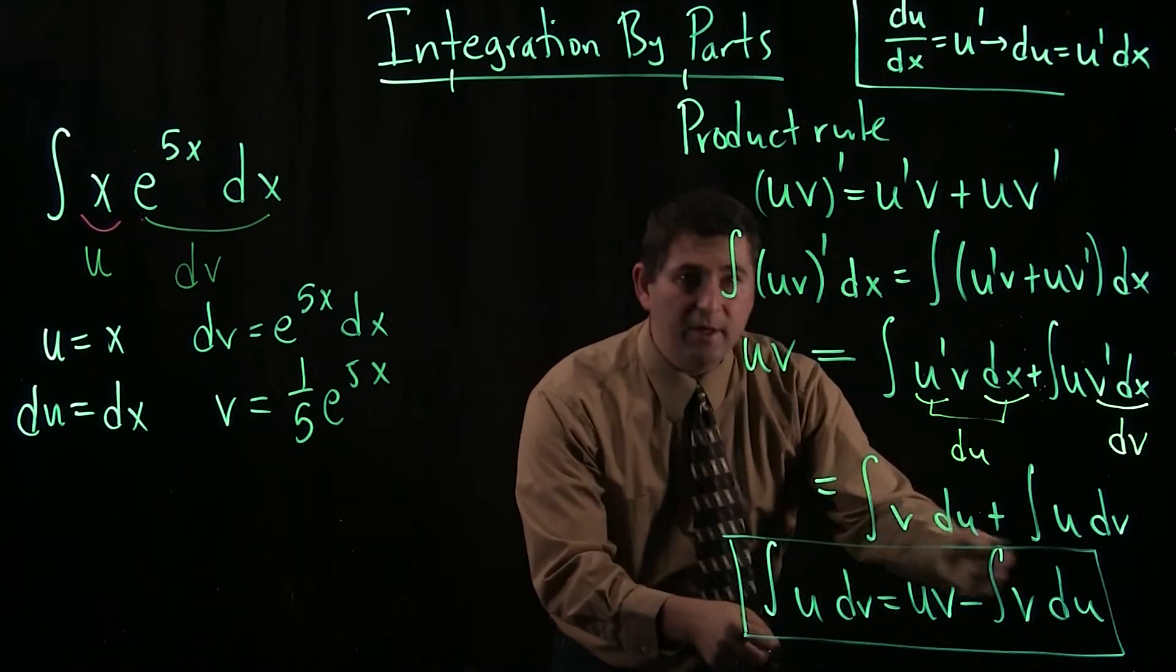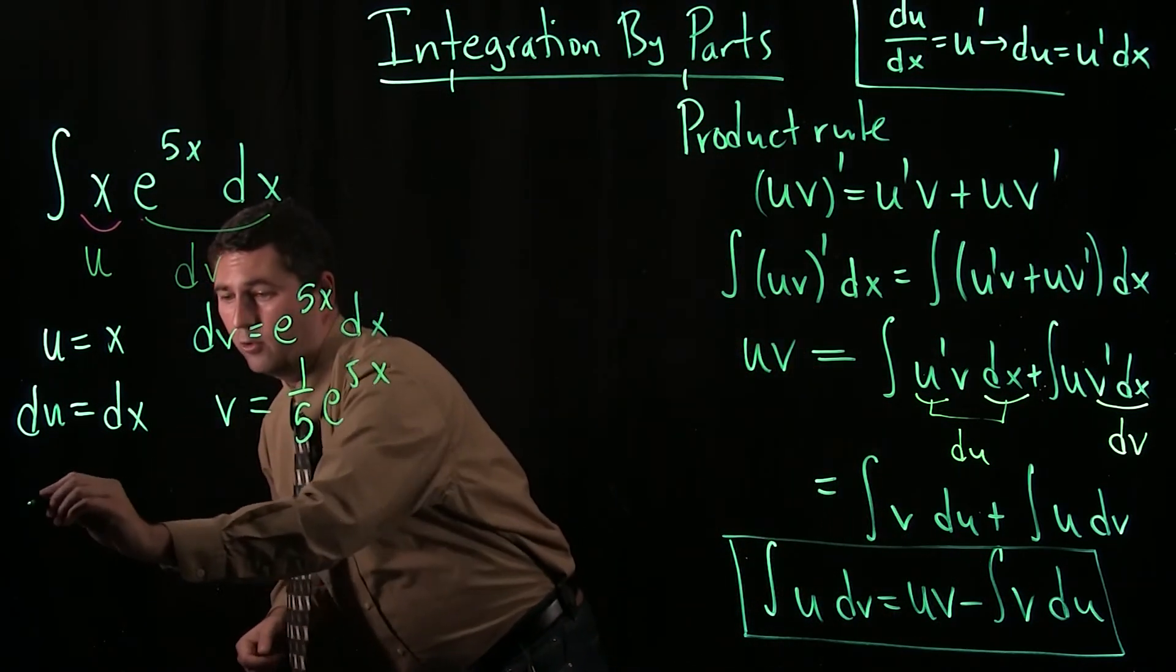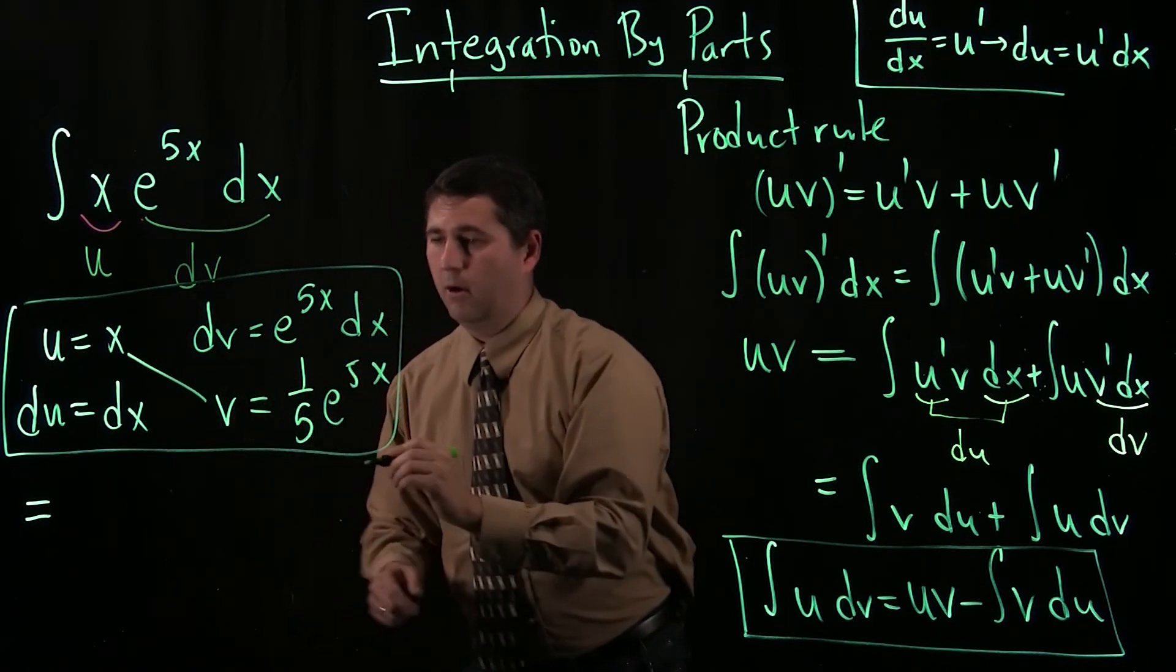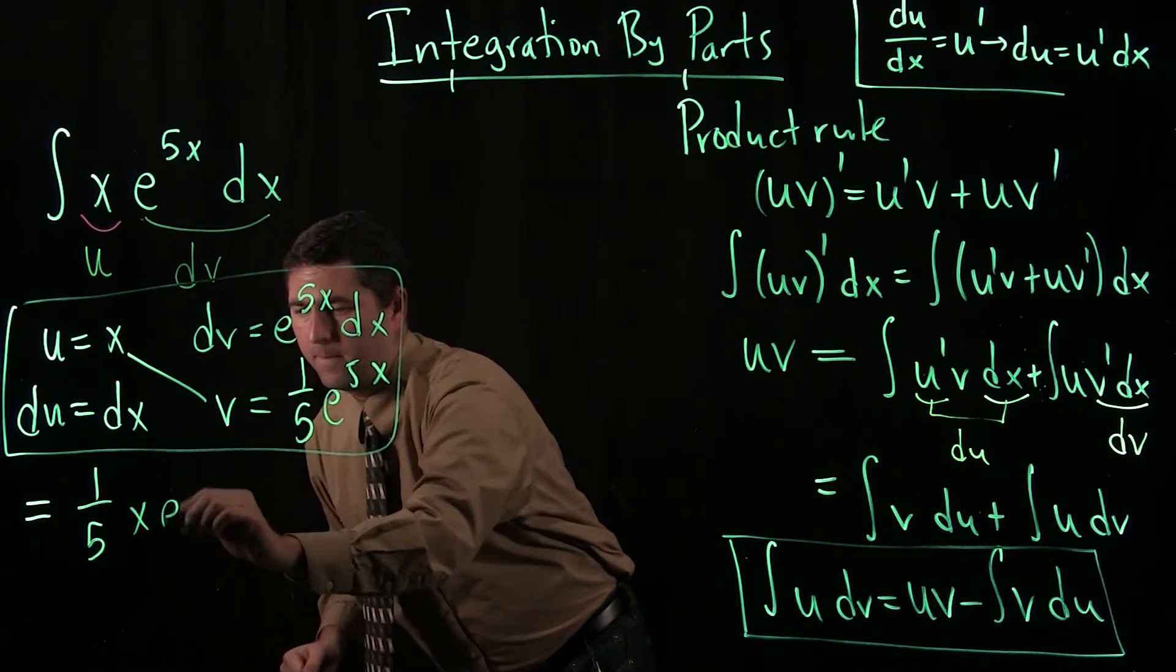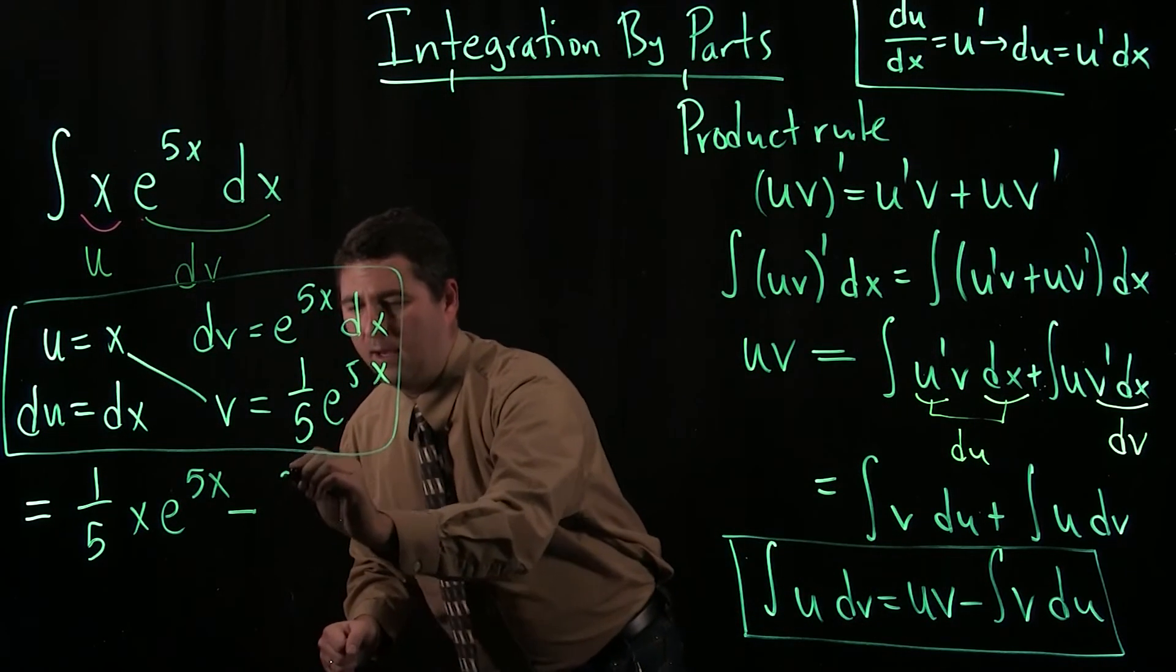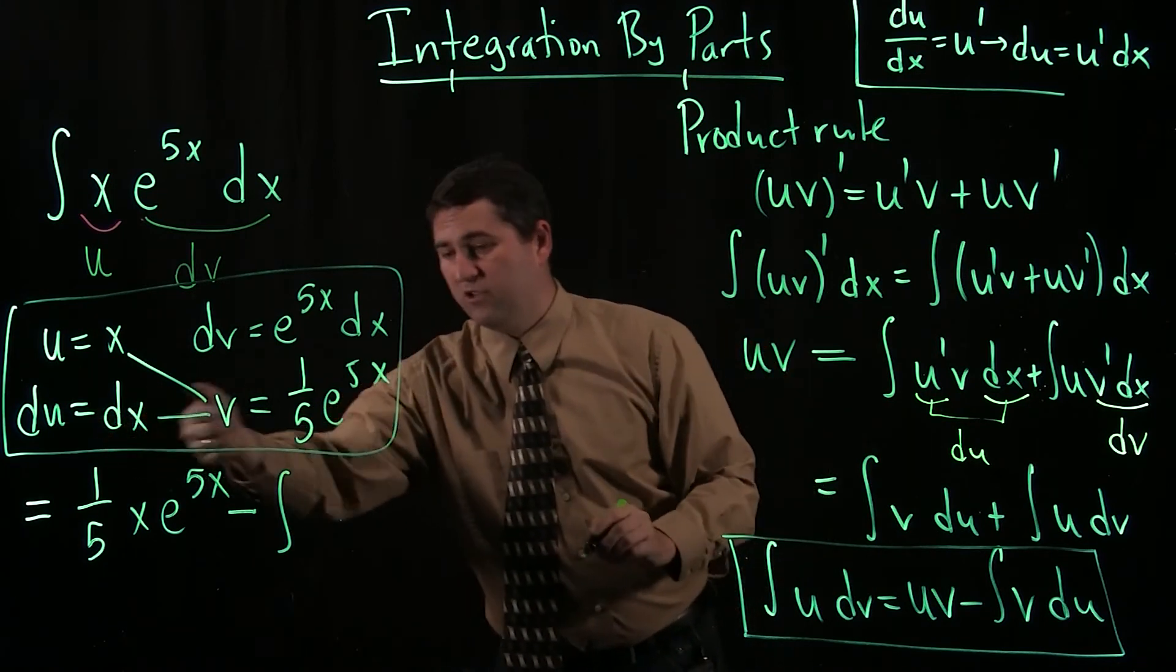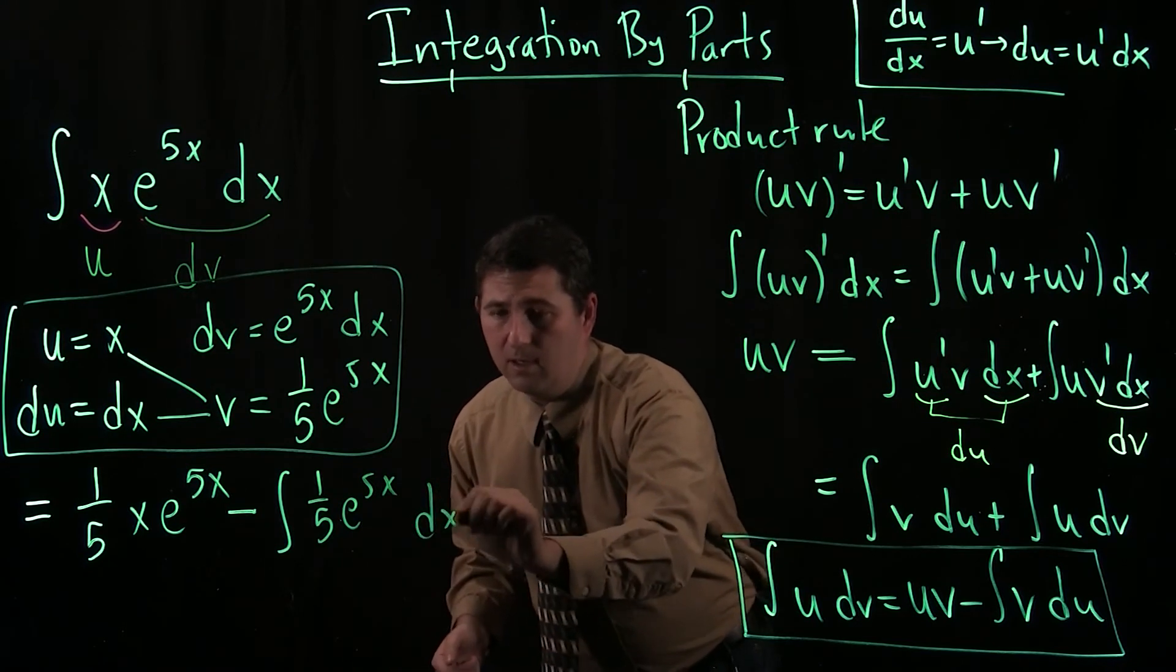Now, I want to put everything into my integration by parts formula. So, our integral is going to equal uv. So, I'm going to multiply here. 1 fifth x e to the 5x minus an antiderivative of what? v du. So, that means I multiply across. So, v is 1 fifth e to the 5x, and du is just dx. So, I have 1 fifth e to the 5x dx.